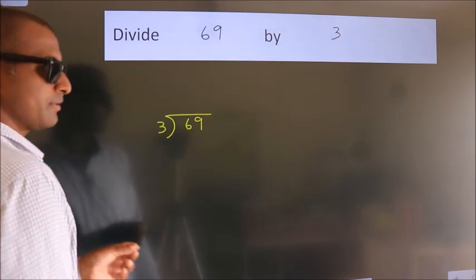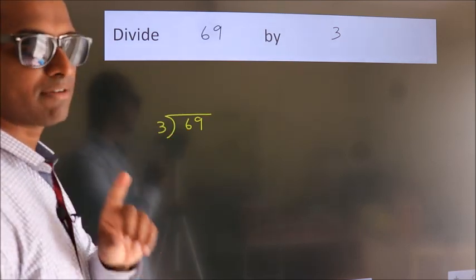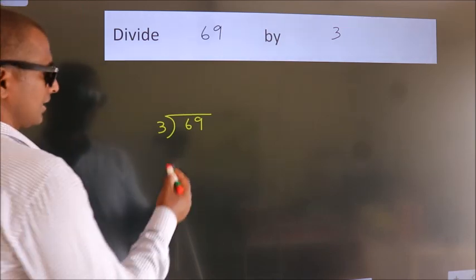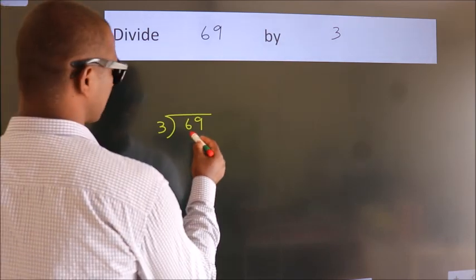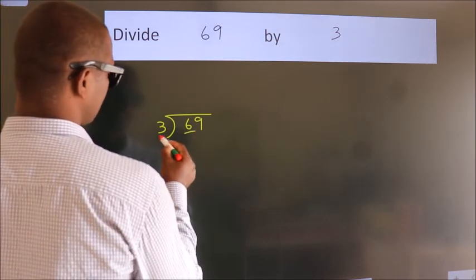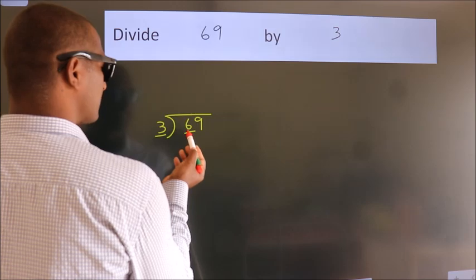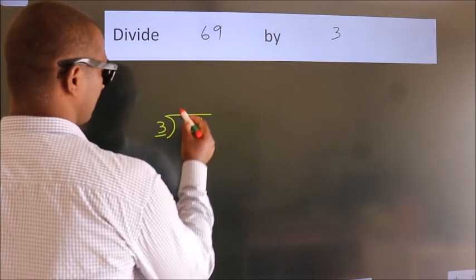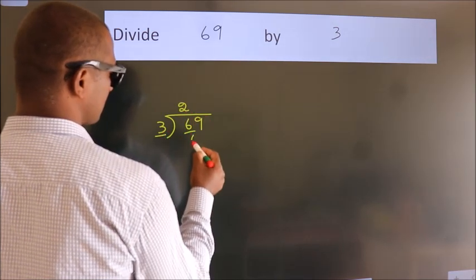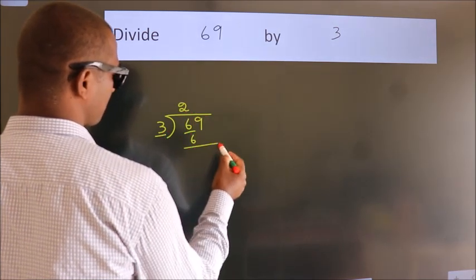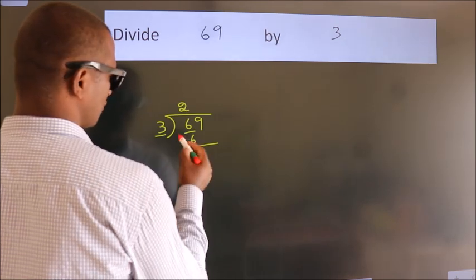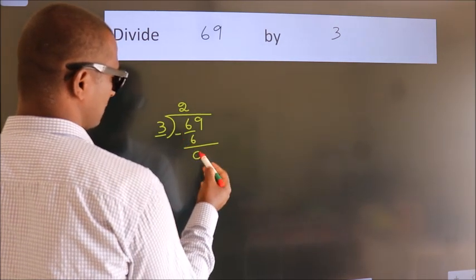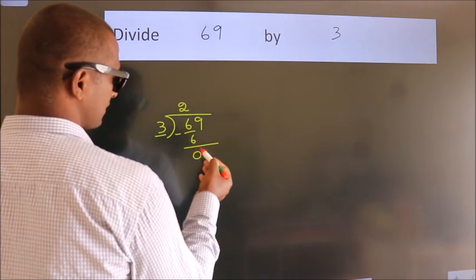This is your step 1. Next, here we have 6, here 3. When do we get 6? In the 3 times table, 3 twos are 6. Now we should subtract, we get 0.